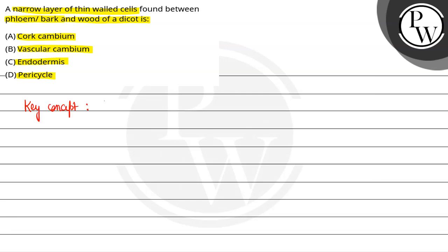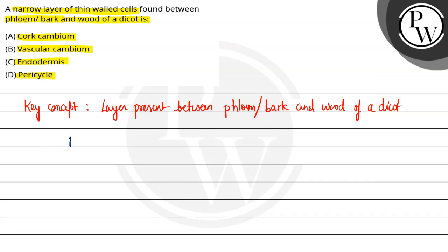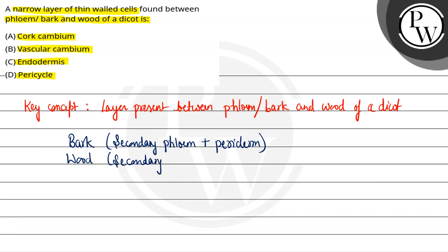The bark is formed of secondary phloem and pericycle. And here would be secondary xylem.